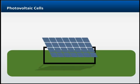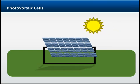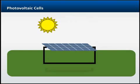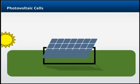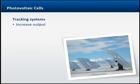The alternative is to build a tracking system. A tracking system moves the array throughout the day, following the movement of the sun. Tracking systems may be one-axis, which follow the sun's movement from east to west across a single day, or two-axis, which track daily movement as well as the sun's movement north to south on a seasonal basis. Tracking systems increase output for the same number of cells, and two-axis systems increase output more than one-axis systems.